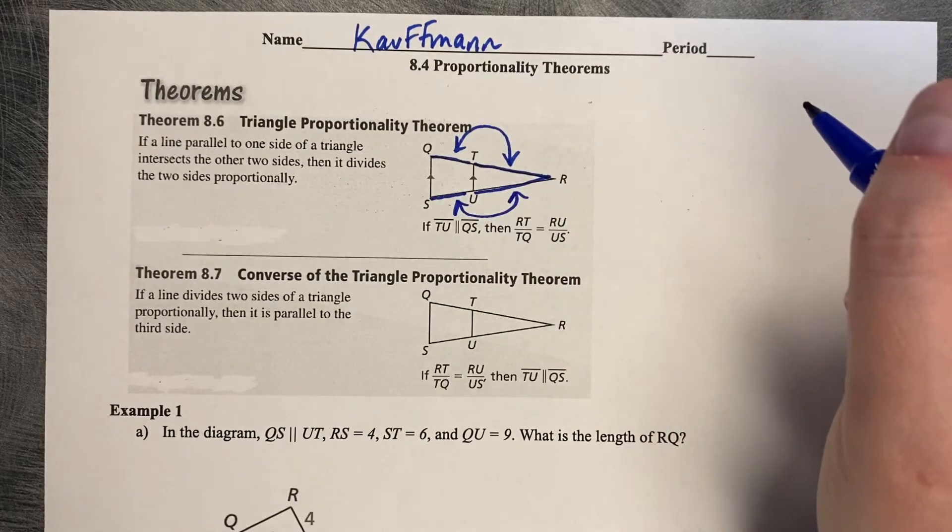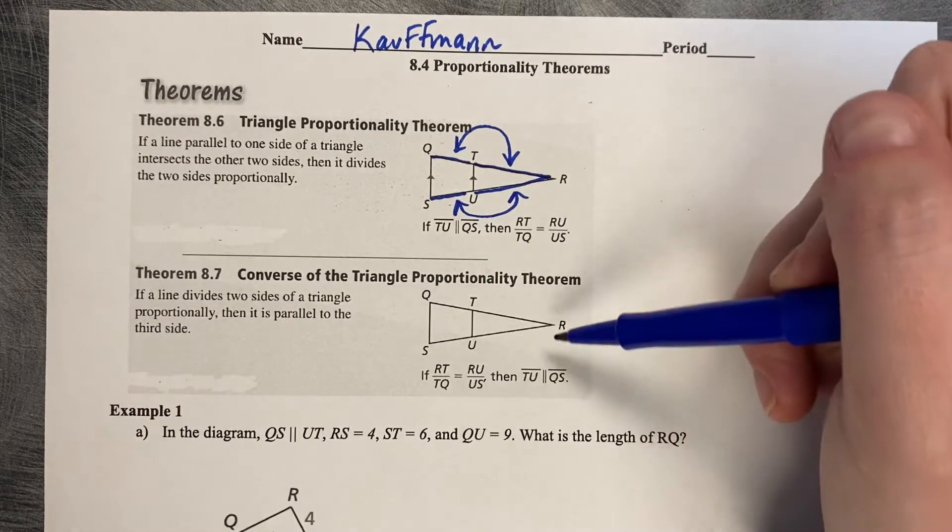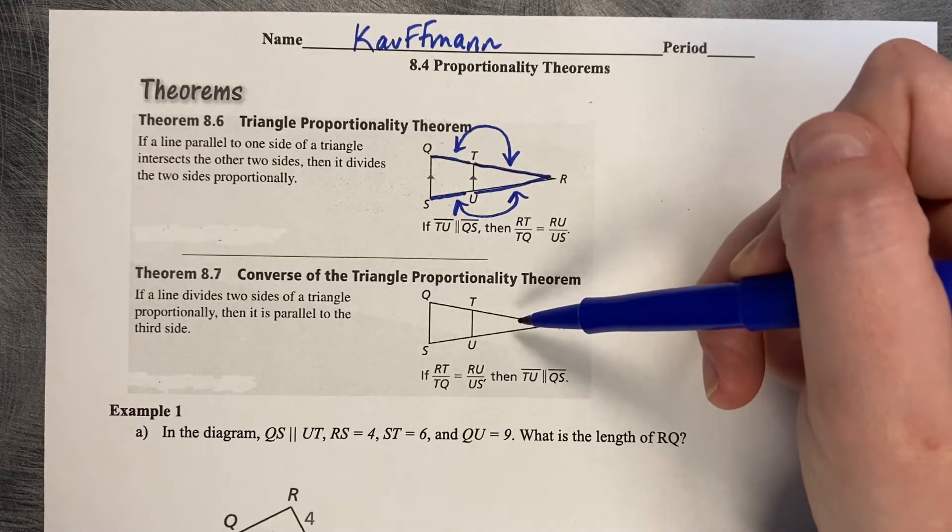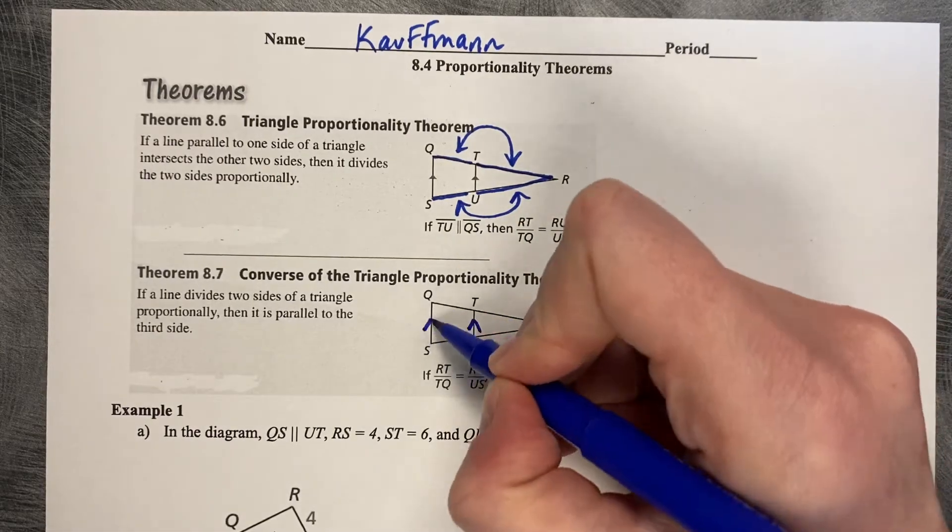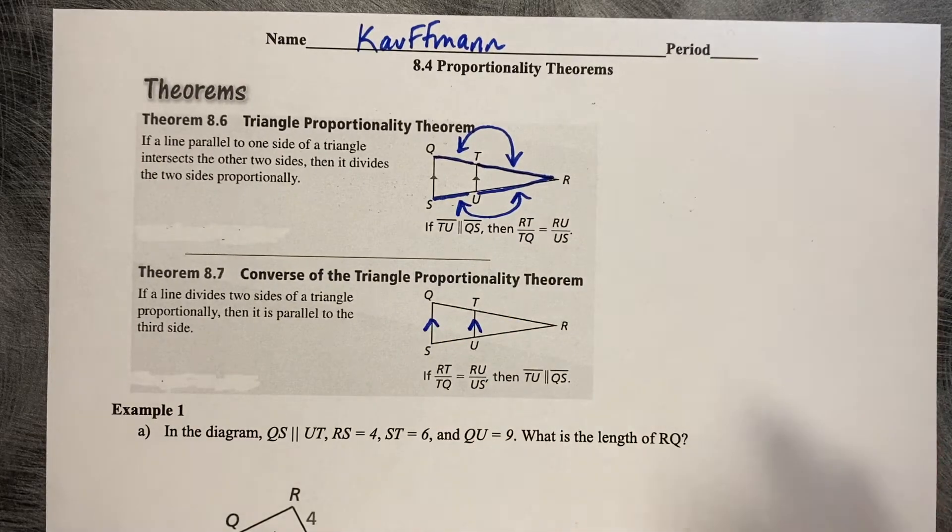Theorem 8.7 is the converse. If the side lengths are proportionate, then the opposite sides become parallel.